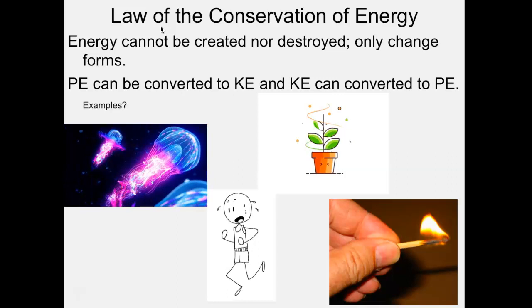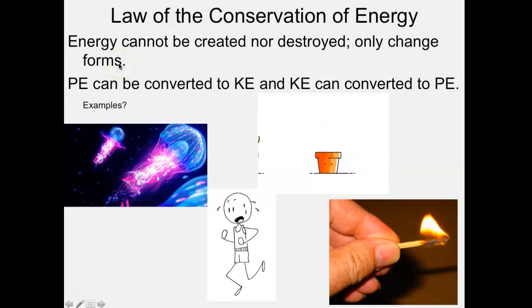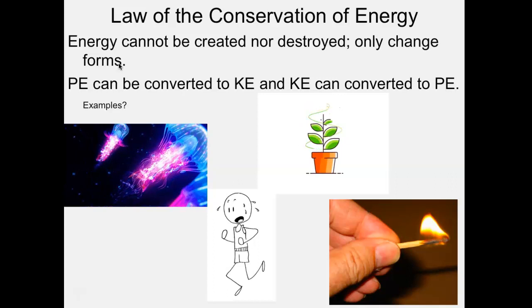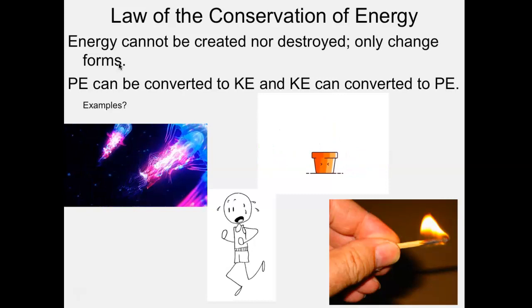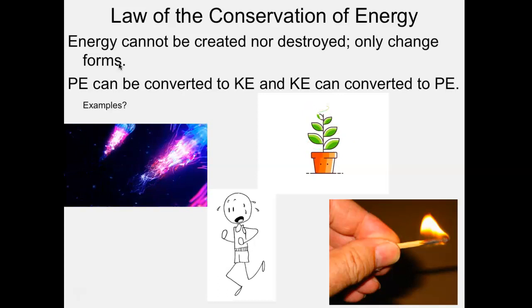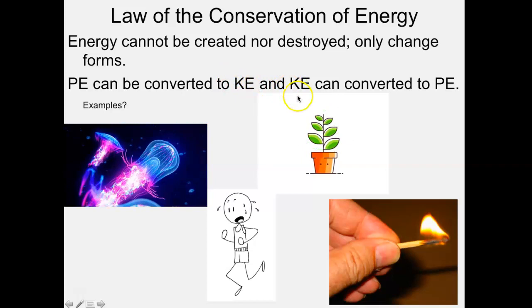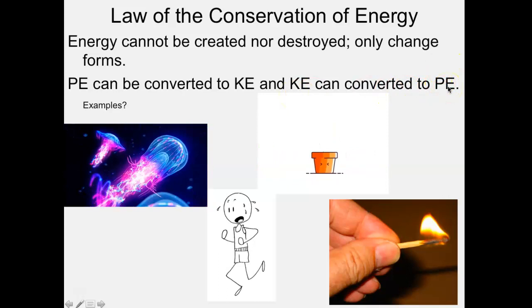This brings us to the law of conservation of energy. All the energy in the entire universe cannot be created nor destroyed — you can't just invent energy out of nothing. Energy is a finite amount, but energy can change forms. That's what living things do: they can take potential energy and convert it to kinetic energy, and some living things can take kinetic energy and convert it to potential energy.